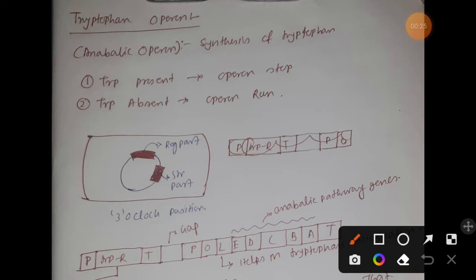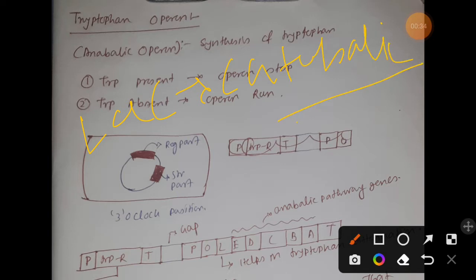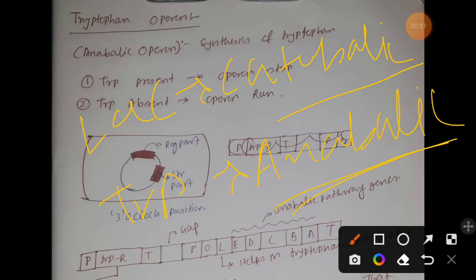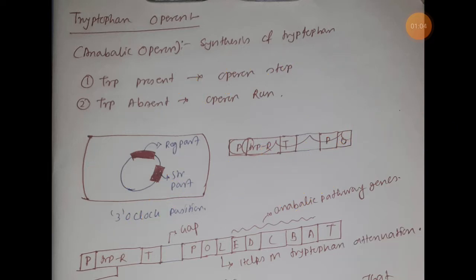That lactose operon was a catabolic type. I hope you have already watched the very first video of operon where we discussed about what is catabolic operon and what is anabolic operon. Tryptophan operon is an example of anabolic operon. The work of anabolic operon is simply to focus on synthesizing something.